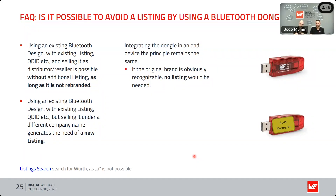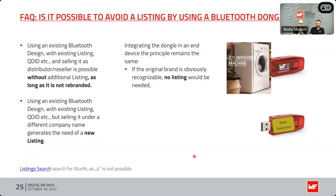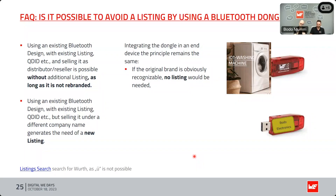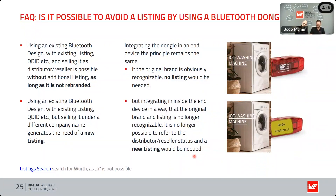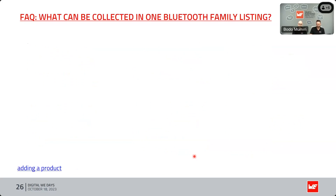Similarly, if you want to avoid a Bluetooth listing with a built-in Bluetooth module, you can use a USB dongle in a USB port — for example, on the back of a washing machine — and as long as the dongle with the brand mark is visible, you don't need a listing. But if you integrate the Bluetooth module inside the washing machine where it is no longer visible, you need a new listing because the complete device is from a new company.